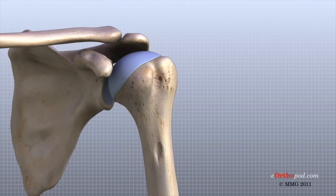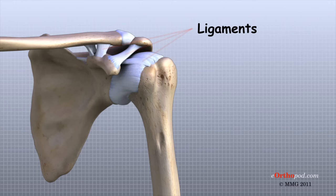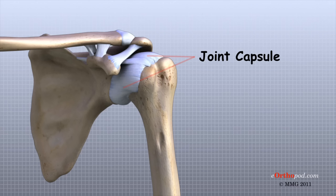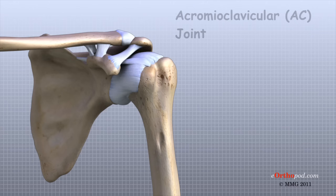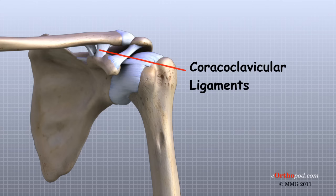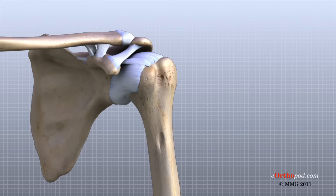There are several important ligaments in the shoulder. Ligaments are soft tissue structures that connect bones to bones. The joint capsule is a watertight sac that surrounds a joint. In the shoulder, the joint capsule is formed by a group of ligaments that connect the humerus to the glenoid. These ligaments are the main source of stability for the shoulder. They help hold the shoulder in place and keep it from dislocating. Ligaments attach the clavicle to the acromion in the AC joint. Two ligaments connect the clavicle to the scapula by attaching to the coracoid process, a bony knob that sticks out of the scapula in the front of the shoulder.